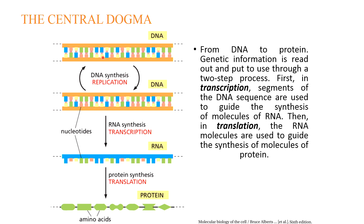Here you can see a schematic picture of how genetic information flows in all cells. Starting with double-stranded DNA, which needs to be multiplied: the process describing the multiplication of DNA is called DNA synthesis or replication. DNA is then used as a matrix to synthesize RNA molecules in a process called transcription. When RNA is synthesized, it is used as a matrix to synthesize proteins in a process called translation.